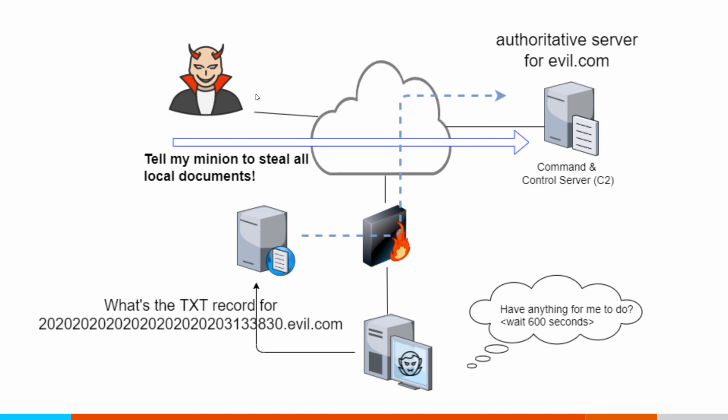The first thing my attacker does is they go out and register some domain — we're using the example of evil.com. You can't actually use evil.com, that's already taken. When they register that domain, one of the questions they're going to get asked is: where are your authoritative name servers? In other words, if somebody wants to look up a resource within that domain, what IP addresses do they connect to? And what the attacker will do is register the IP addresses of their command and control servers.